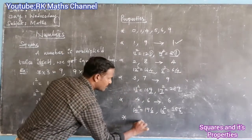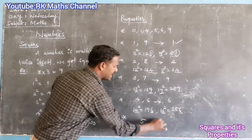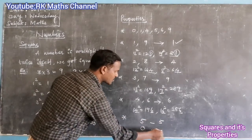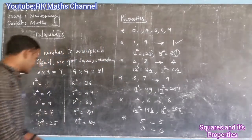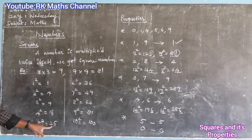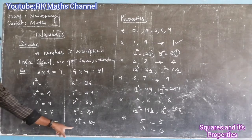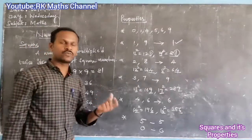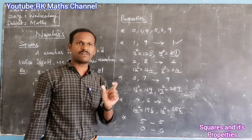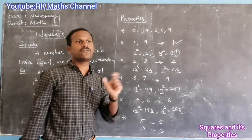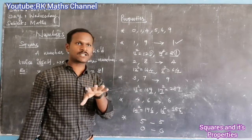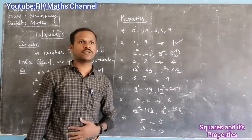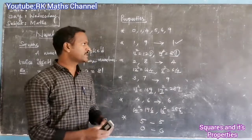If the unit place is 5, the square's unit place is 5 or 0. For example, 15 squared is 225 and 20 squared is 400. So the answer ends in 0 or 5 depending on the number.